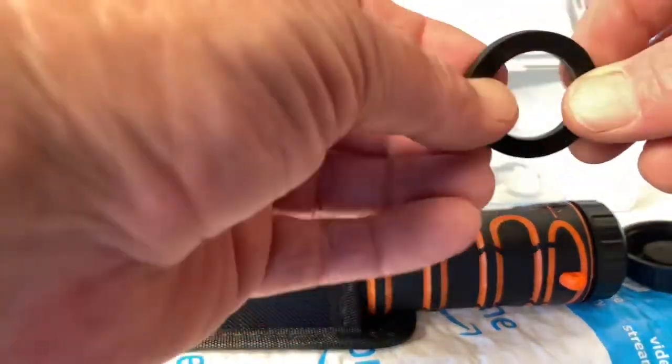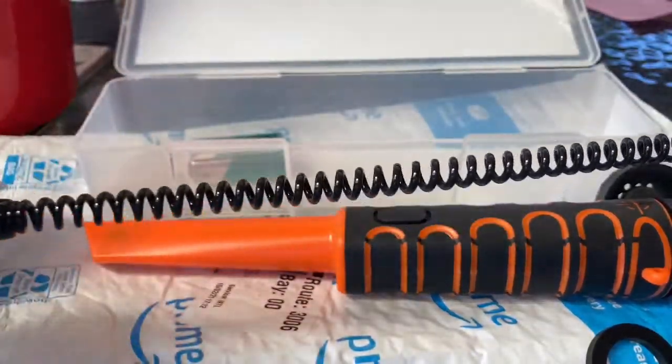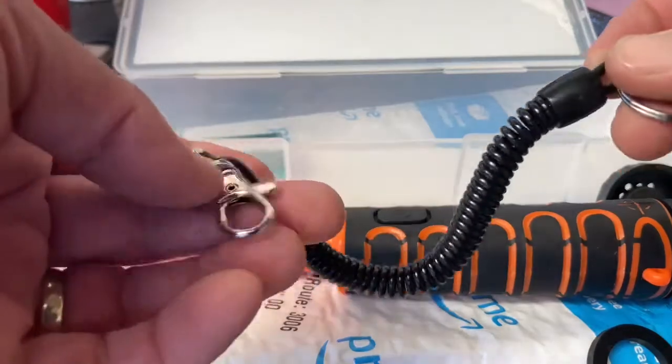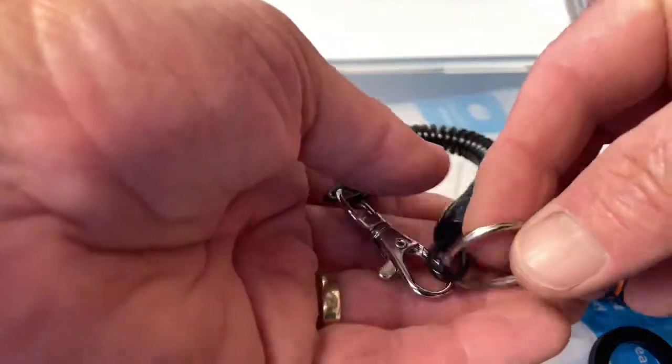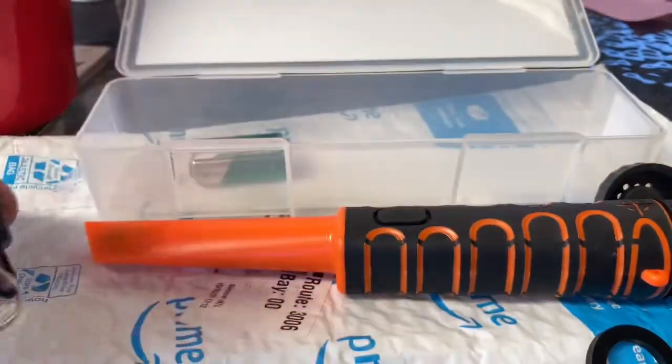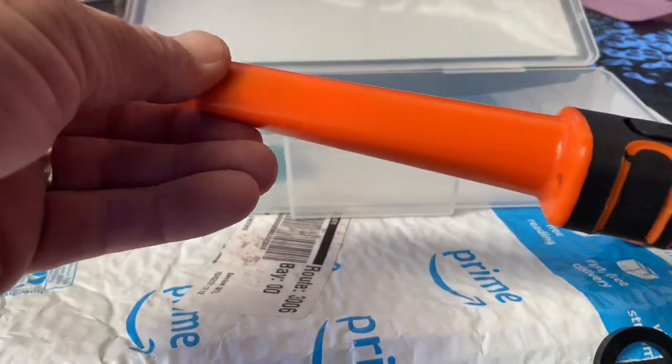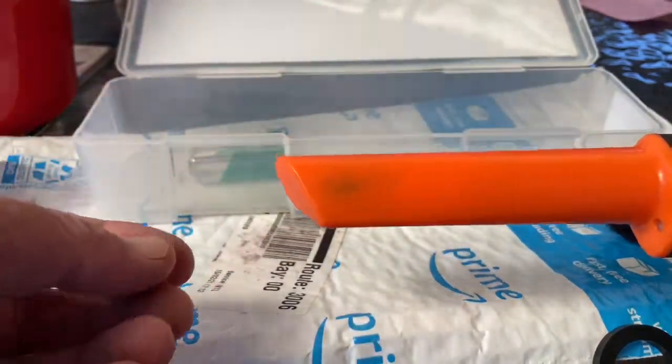There's a very thick rubber washer. Got the lanyard, stretchable to put on your belt. And yeah, that's a pretty intense tip on that.